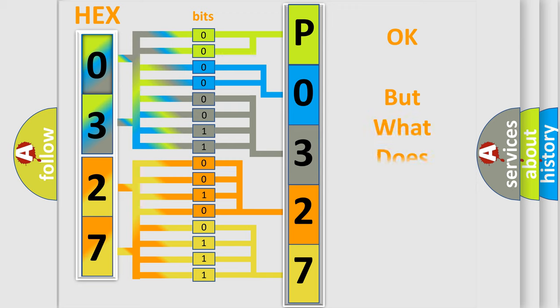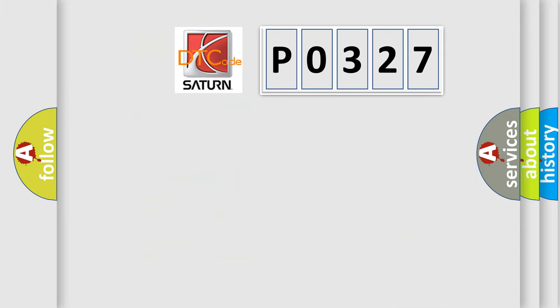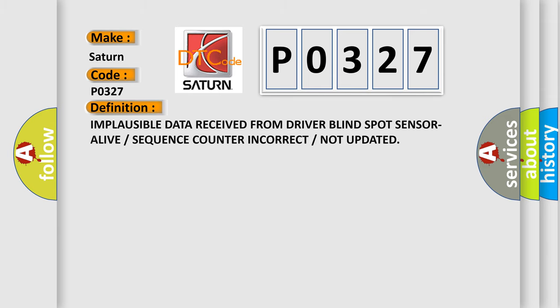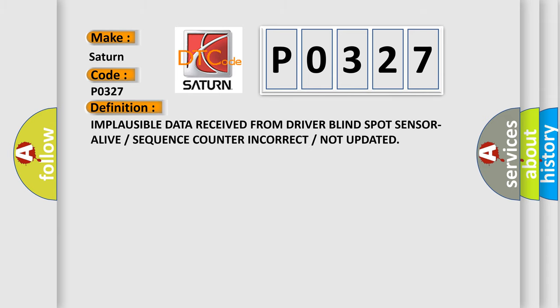The number itself does not make sense to us if we cannot assign information about what it actually expresses. So, what does the Diagnostic Trouble Code P0327 interpret specifically for Saturn car manufacturers? The basic definition is: implausible data received from driver blind spot sensor — alive or sequence counter incorrect or not updated.